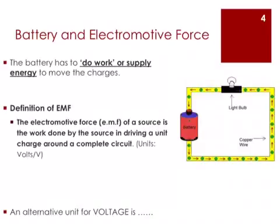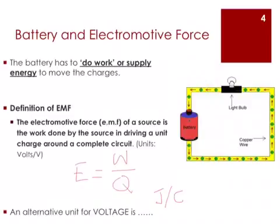We say that the electromotive force of a source is the work done by the source in driving a unit charge around a complete circuit. Where E is the EMF of the battery, W is the work done, and Q is the amount of charge. The alternative unit for voltage is joules per coulomb.